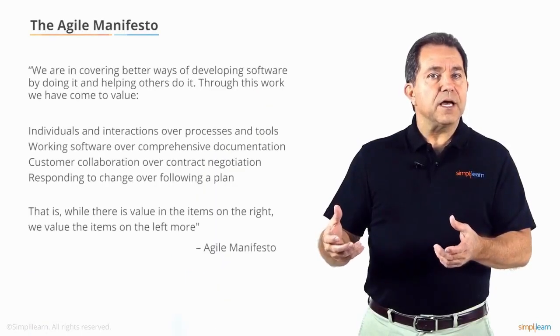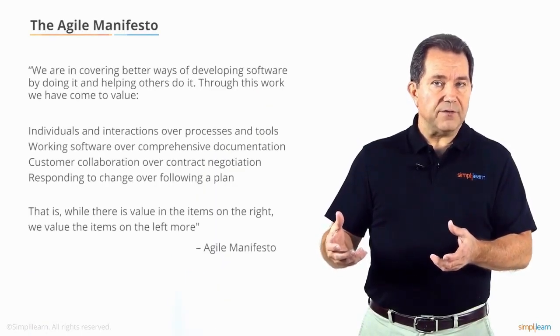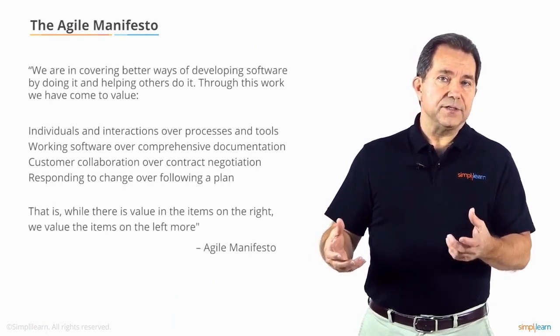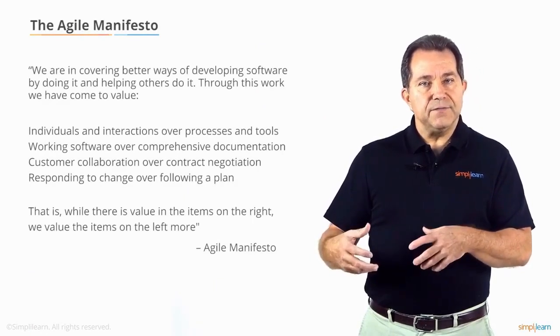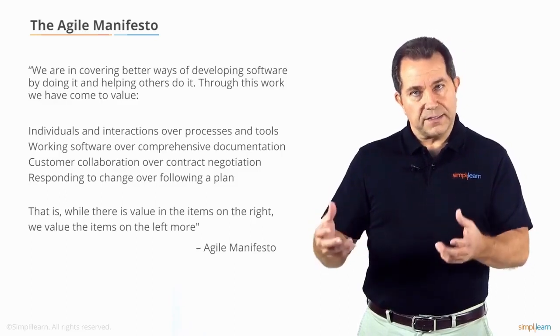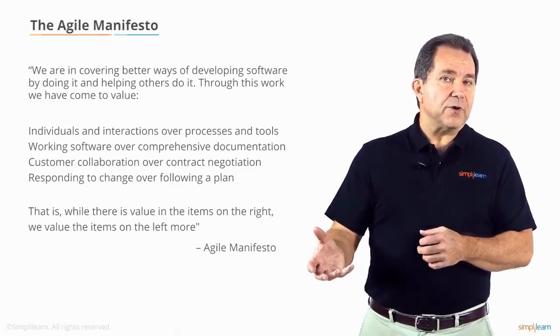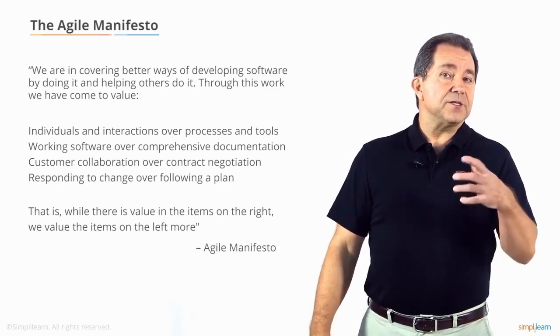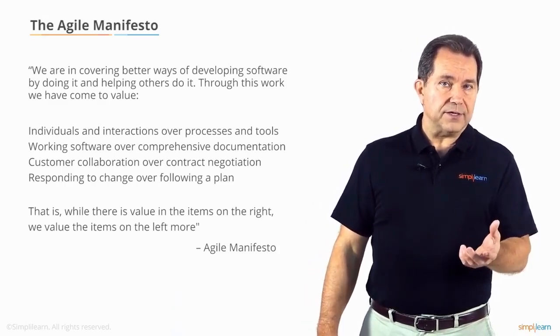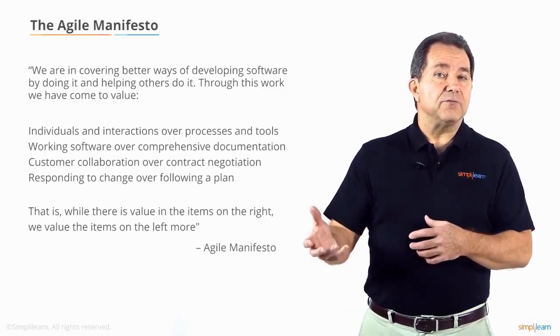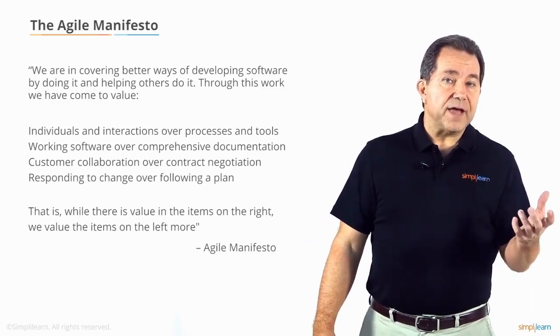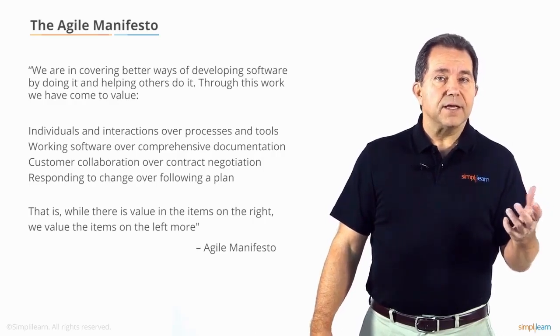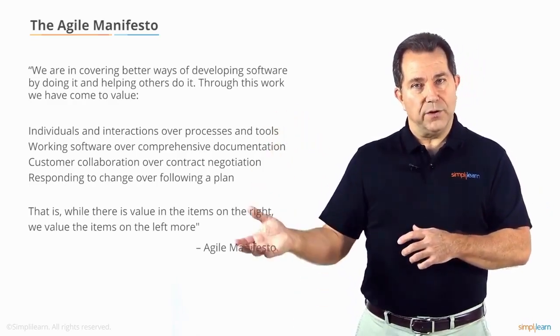The Agile manifesto is a foundational document for all Agile methods and it reads: "We are uncovering better ways of developing software by doing it and helping others do it. Through this work we have come to value individuals and interactions over processes and tools, working software over comprehensive documentation, customer collaboration over contract negotiation, responding to change over following a plan. That is, while there is value in the items on the right, we value the items on the left more."